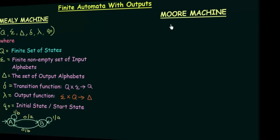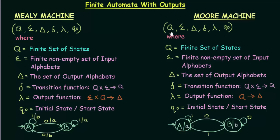Now let's go to the Moore machine. The Moore machine is also defined using six tuples: Q, Sigma, Delta, Del, Lambda, and Q naught. Q is the set of states, Sigma is the finite non-empty set of input alphabets, Delta is the set of output alphabets, and Del is the transition function that maps Q cross Sigma to Q — all the same as before. However, Lambda, the output function, is defined as Q to Delta, rather than Sigma cross Q to Delta.